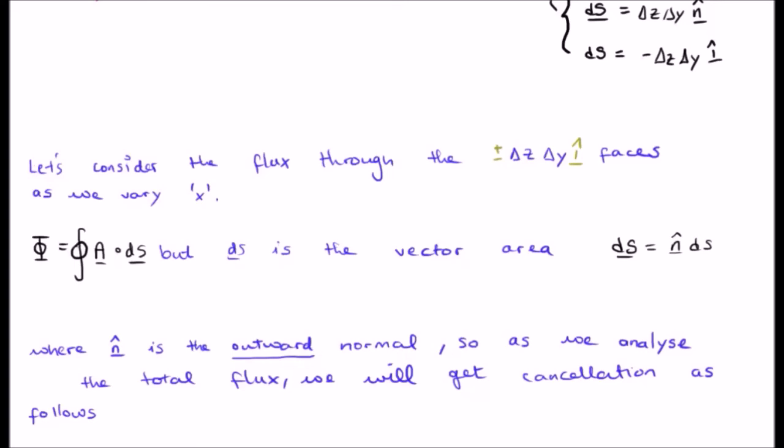So, let us consider the flux through any of the plus or minus delta Z delta Y i hat faces as we vary X. Remember the flux is the closed surface integral of A dot dS. But dS is the vector area or n hat dS. N hat is the outward normal. So, as you analyze the total flux, we're going to get some cancellation. And I'm going to describe that right now.